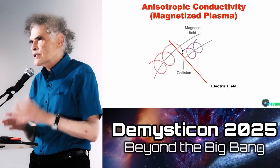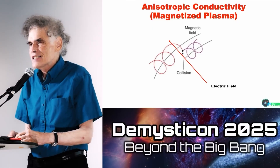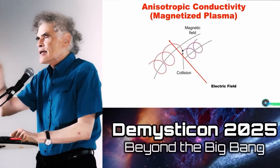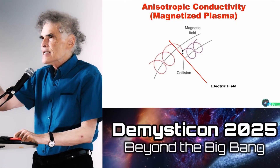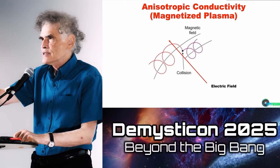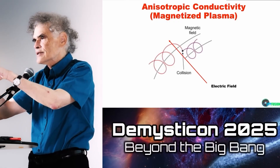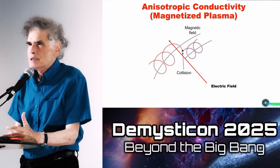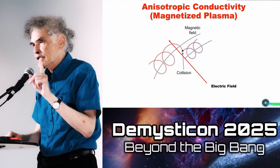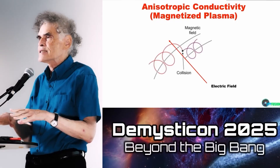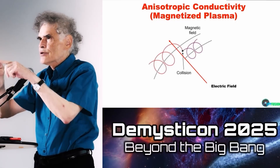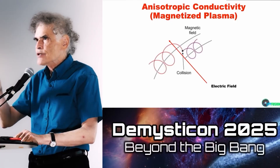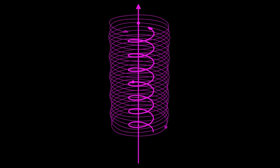Especially in space, there's an additional effect: anisotropic conductivity in a magnetized plasma. Electrons or ions moving in a magnetic field circle around the magnetic field lines and can only cross those lines when hit by another particle. Space plasmas outside of stars are so undense that the collision rate is insignificant compared with the gyro rate, meaning electric currents are constrained to go along the magnetic field lines they create.